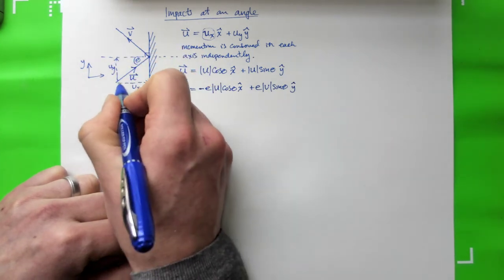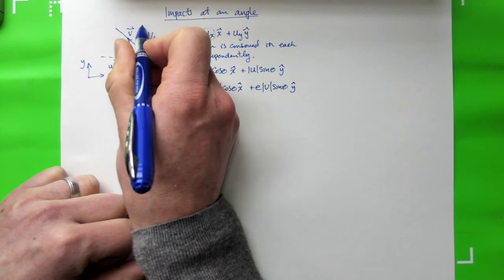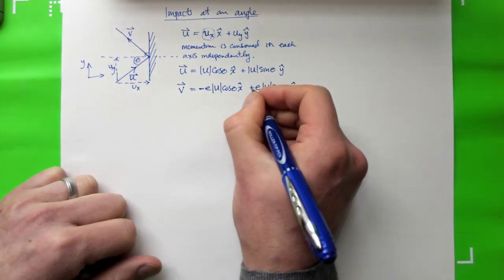What about the y-direction? Well, here it is coming in the positive y-direction. After it bounced, it's still going in the positive y-direction. So we can see from our diagram that we don't need to change the sign over here.